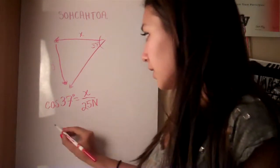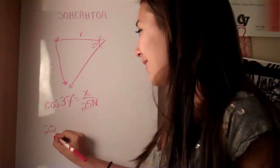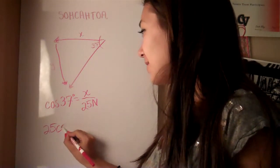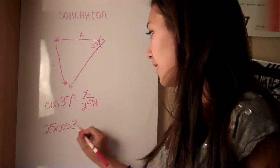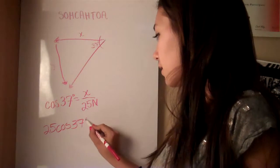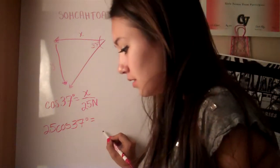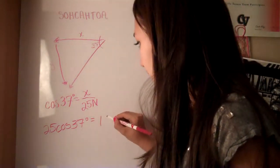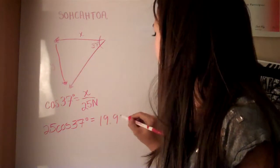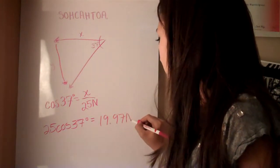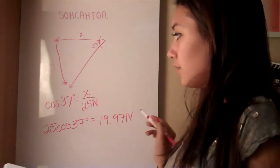And you multiply it by 25 times cosine of 37. And that turns out to be 19.97 newtons for x.